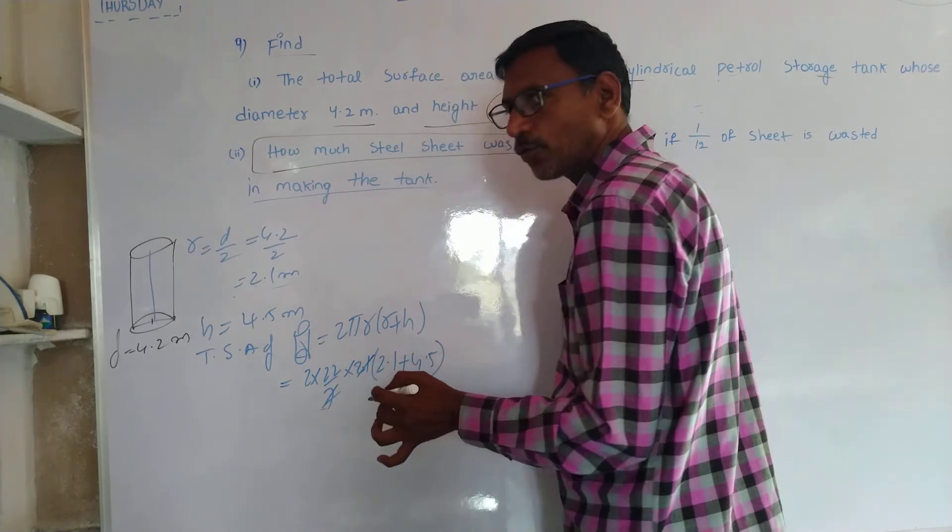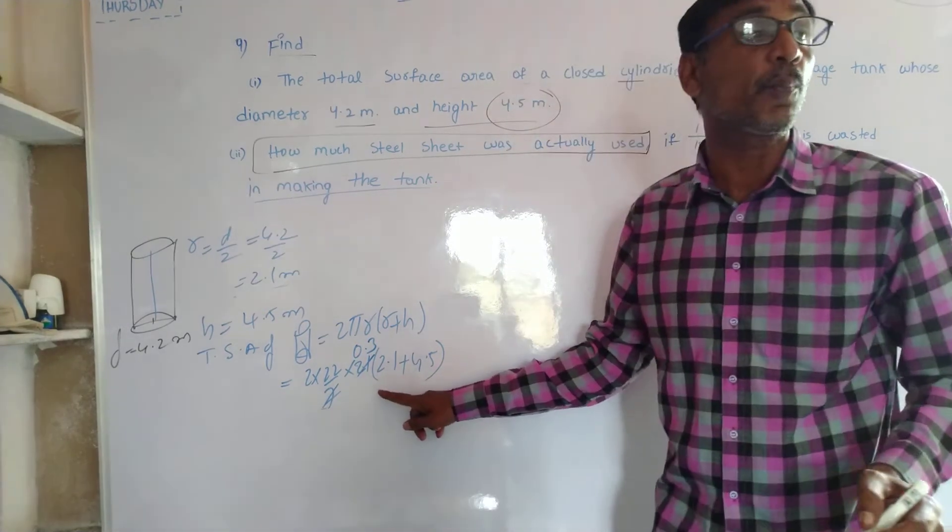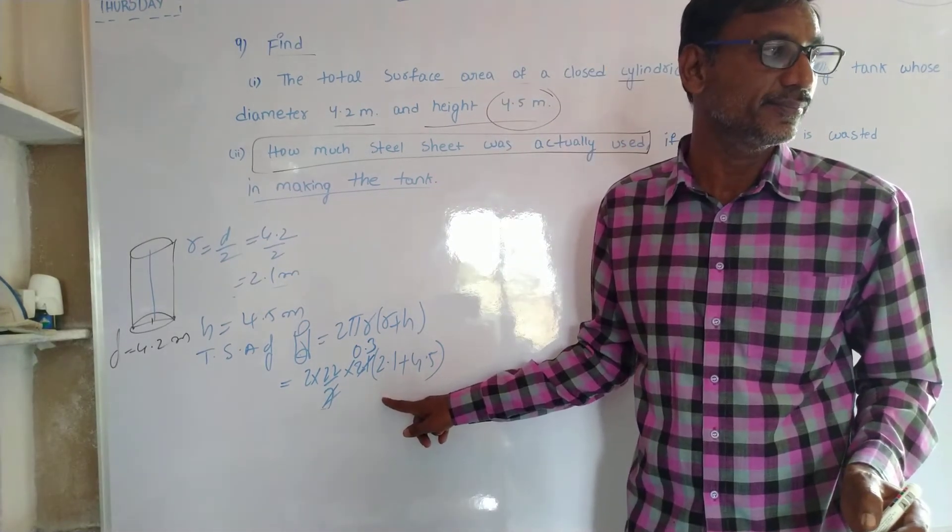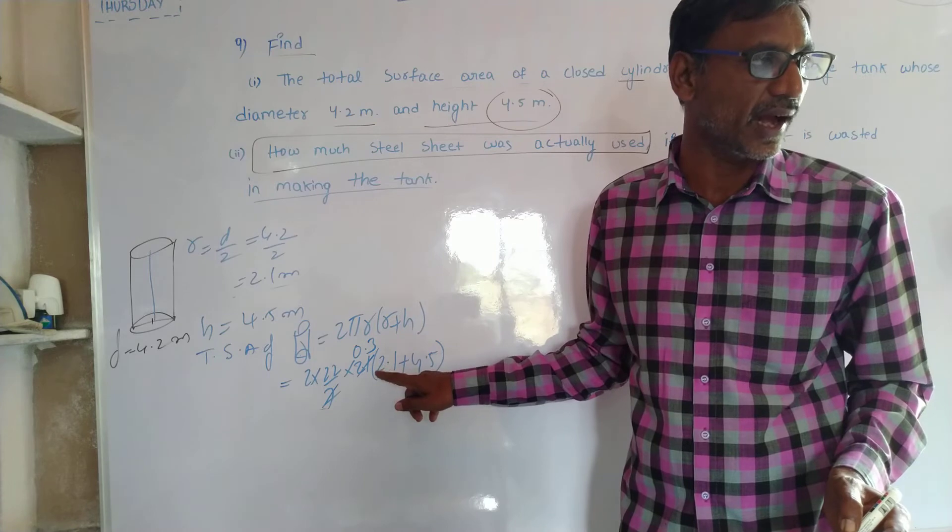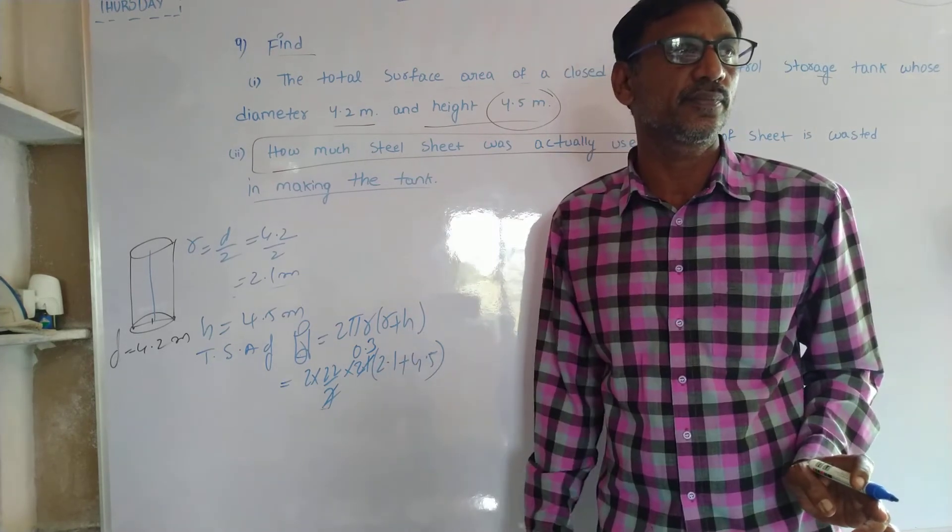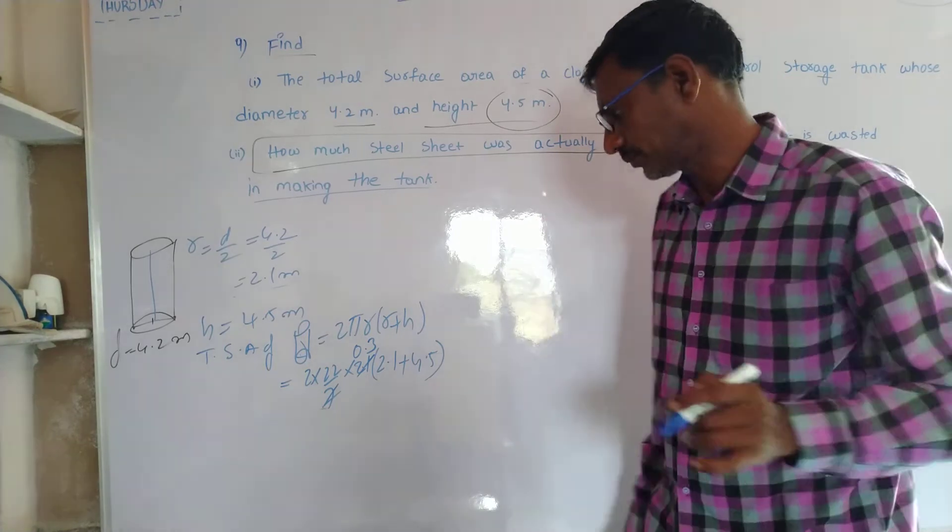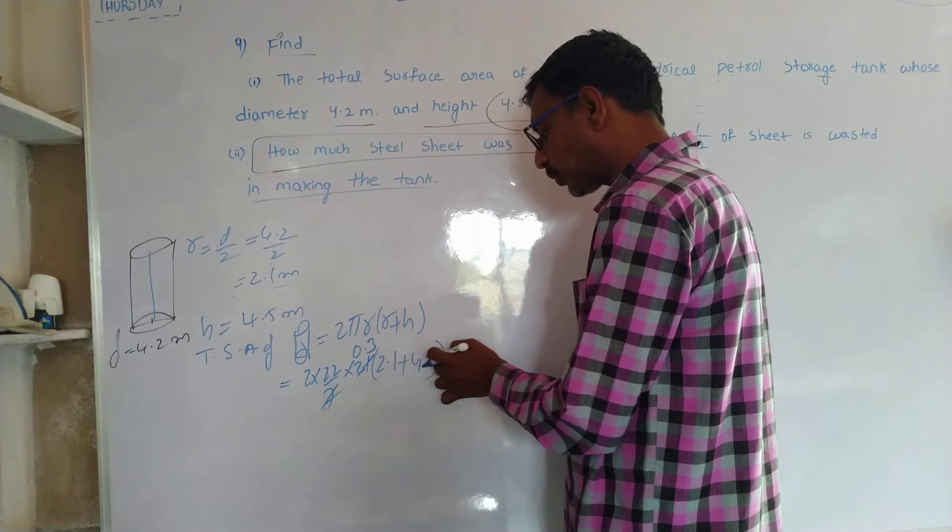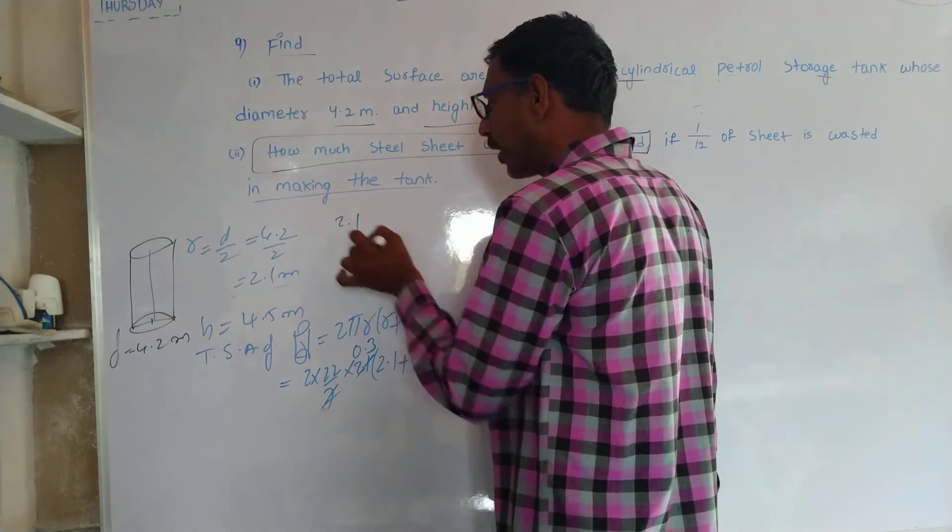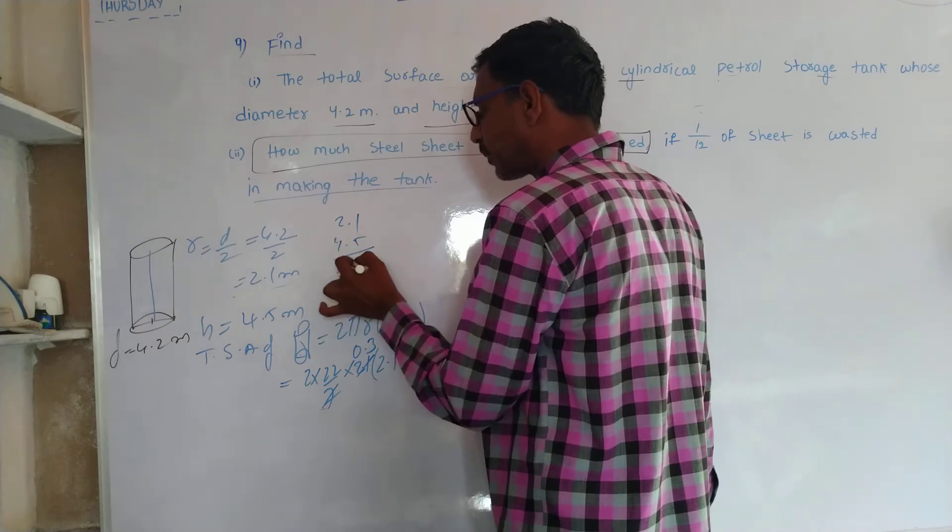7 in 2.1, 0.3 times. This is 2.1, keep in mind. 0.3 times 7 is 2.1. 2.1 plus 4.5 is 6.6. Very good.